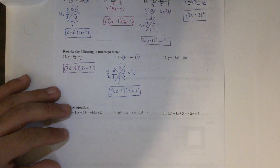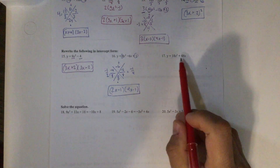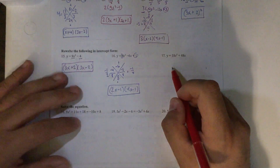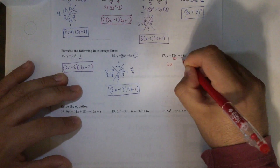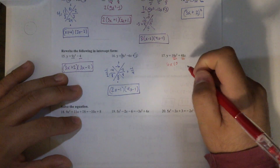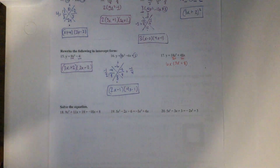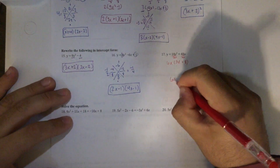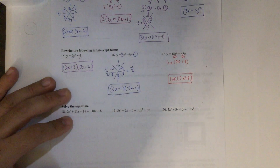For number 17: 18x squared plus 48x. It's in standard form. There is a GCF — 18 and 48 are both divisible by 6 and x, so the GCF is 6x. Dividing each term by 6x gives 3x plus 8. So we get 6x times 3x plus 8. There is nothing else to factor — doing the GCF automatically factored it for us, and we're done.